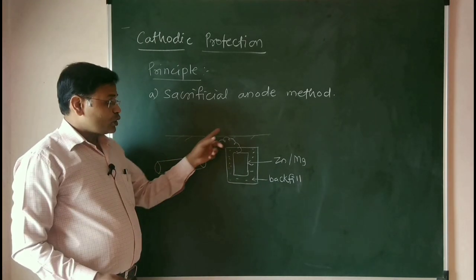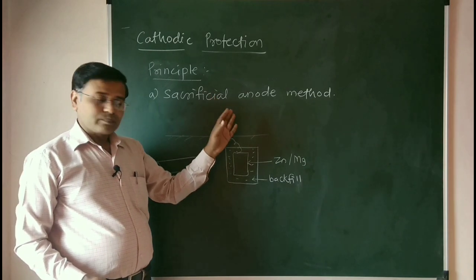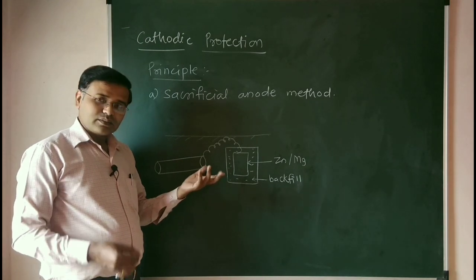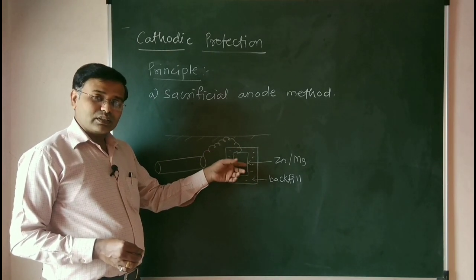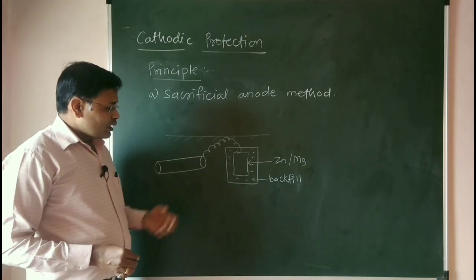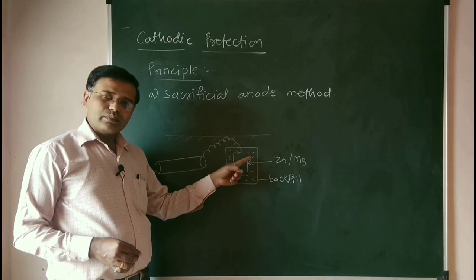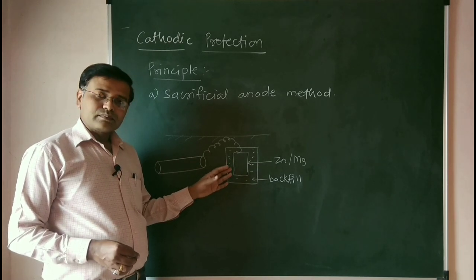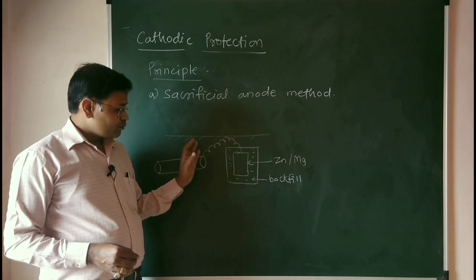This reactive metal will act as anode and the pipeline will act as cathode. This is the sacrificial anode method — the anode is doing the sacrifice, just like a sacrifice in a movie. After some days or months, the zinc or magnesium metal will undergo complete destruction, and then a fresh metal piece has to be connected for the same purpose.